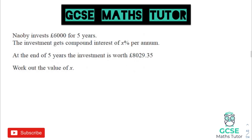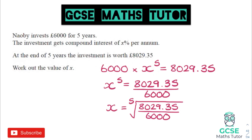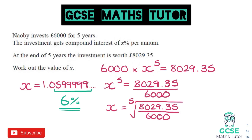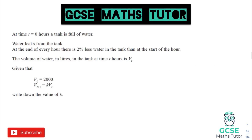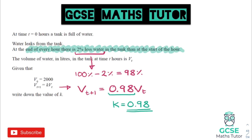On to ratio and proportion: for compound interest you may have to work backwards to find the actual interest rate. Set up your formula as normal — for five years it's x to the power of five — then rearrange and take the fifth root (or whichever root matches the number of years). Remember your multiplier is 1.0-something, and that something is the percentage. For depreciation — for example losing 2% water per year — that's 98%, so the decimal multiplier is 0.98.